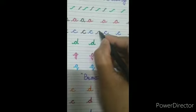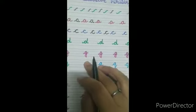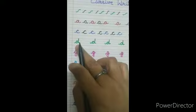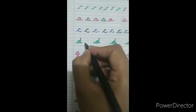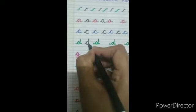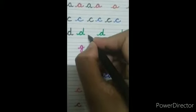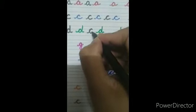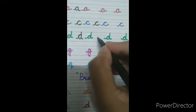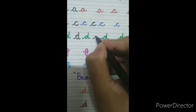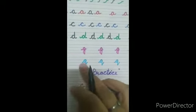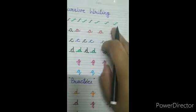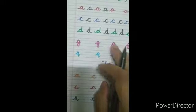We can make 'd' also with this pattern. Make a circle, go up and down. This pattern — make a circle, go up and down. Circle up and down. So you can see we can make 'd' with this pattern.